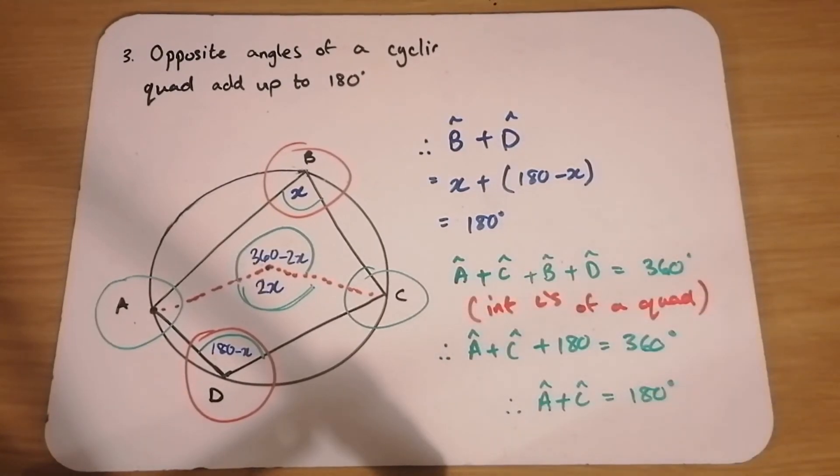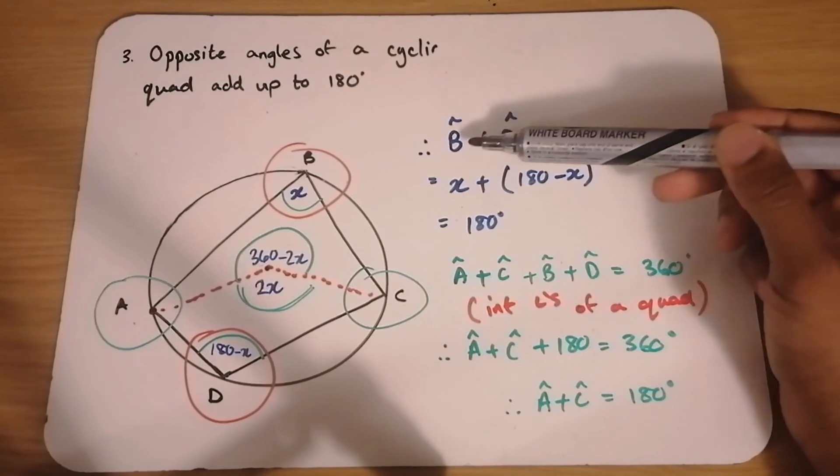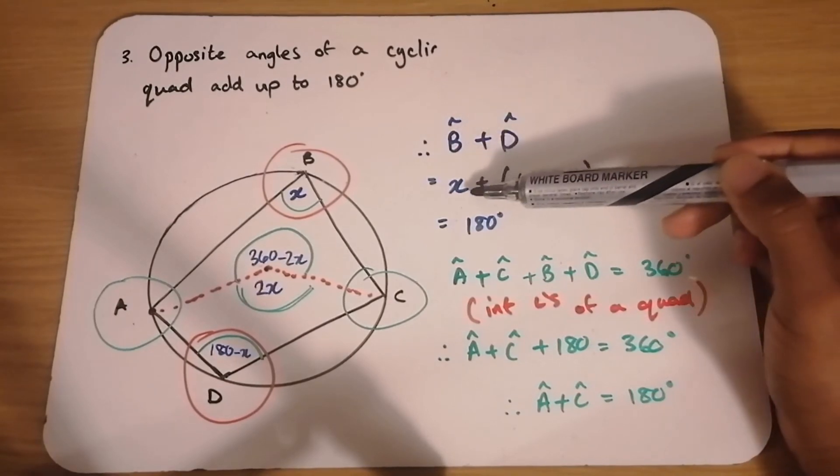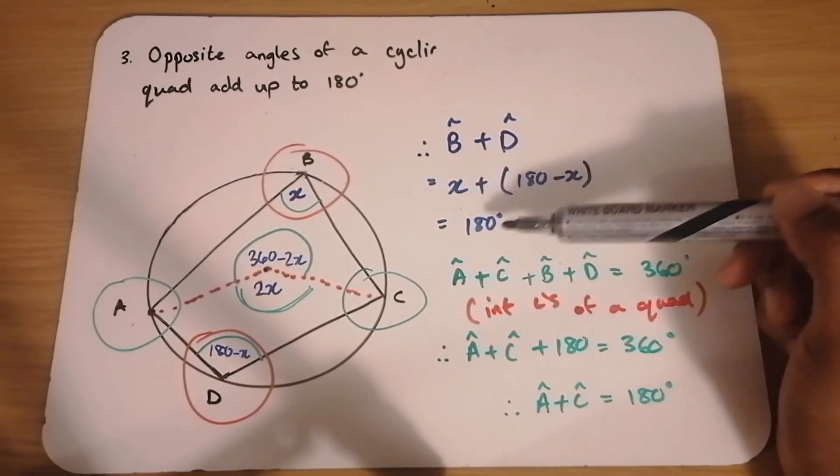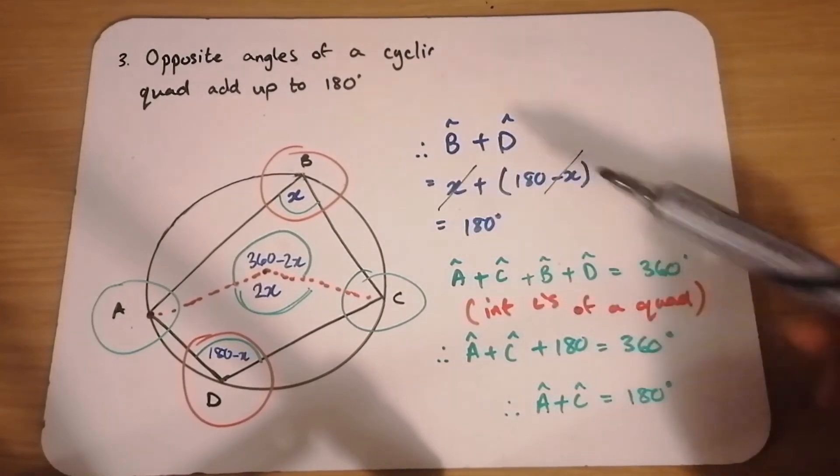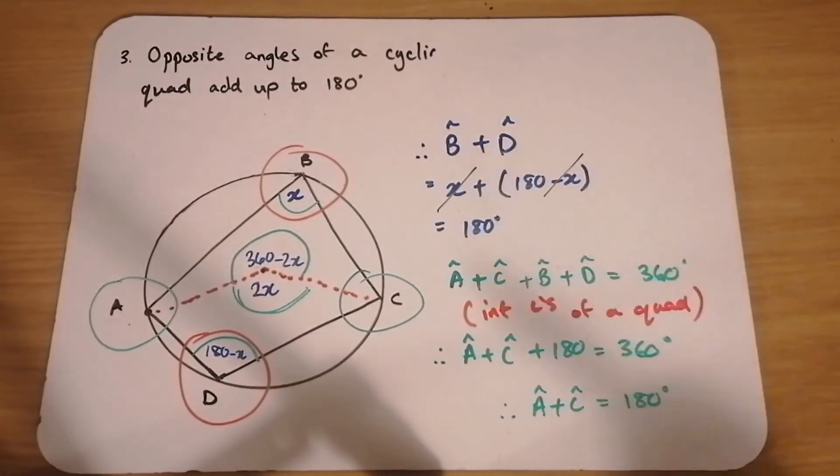Now, if you look here to the right, you can see I wrote it down very nicely. B plus D, X plus 180 minus X is equal to 180. Because the X's cancel. You have a positive X and a negative X.